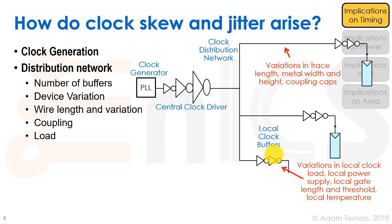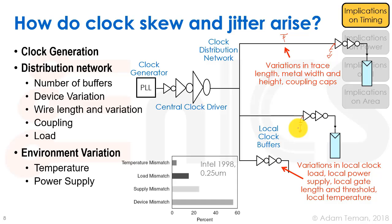Further sources of skew include different coupling to adjacent wires causing extra RC delay, different loads producing different RC delays, and environmental variation — PVT: process, temperature, and voltage. Temperature can vary spatially across the chip, causing different buffer speeds, and IR drop differences in power supply affect switching speed at each point, all contributing to variation.